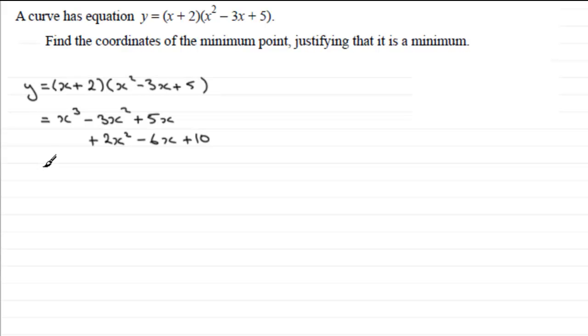And so when I group this together, we've got x cubed. And then minus 3x squared plus 2x squared is going to be minus x squared. And then 5x minus 6x is minus x. And then you've got plus 10. Okay, so we've got what y is then in the expanded form.